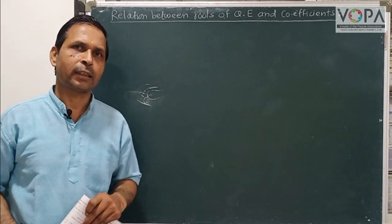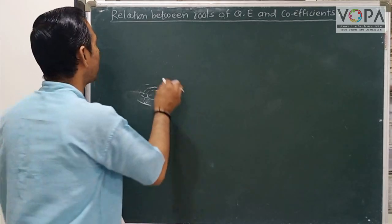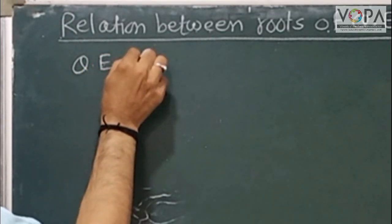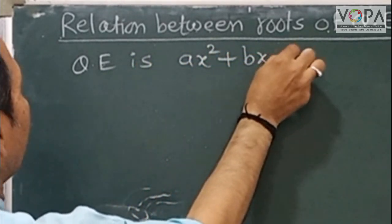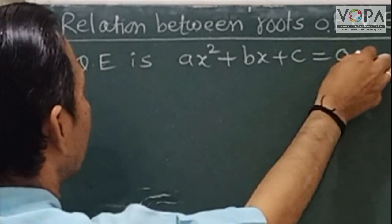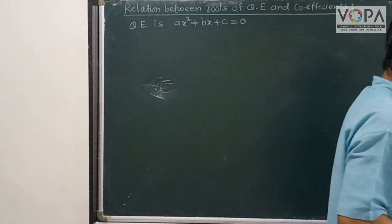The standard form of a quadratic equation is: ax² + bx + c = 0. This is our quadratic equation in standard form.